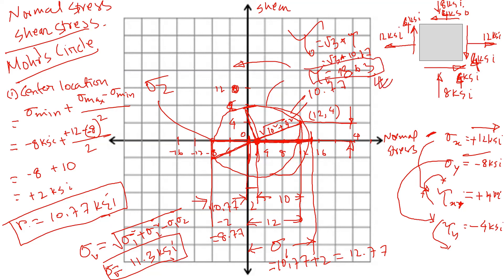So the von Mises shear stress is 18.63 KSI and the von Mises normal stress is 11.3 KSI. We now compare these stresses with the material's allowable stress. If the calculated stress exceeds the material's allowable normal stress or allowable shear stress, the member will fail. If it stays within the allowable limits, the design is acceptable.